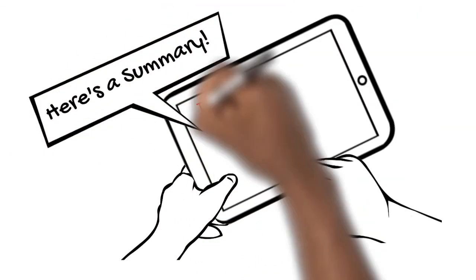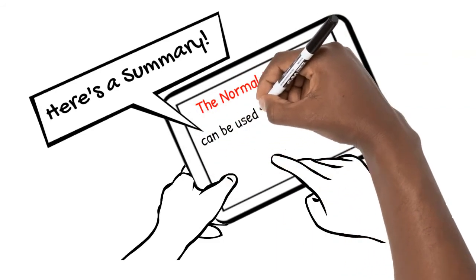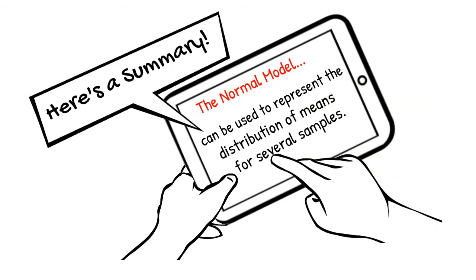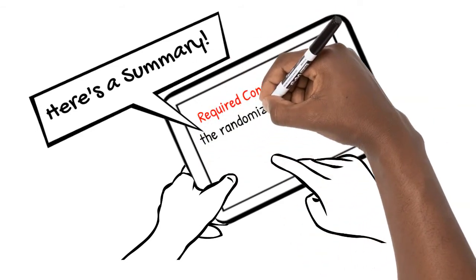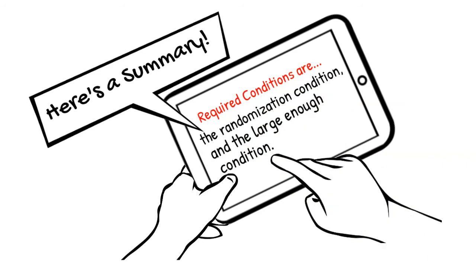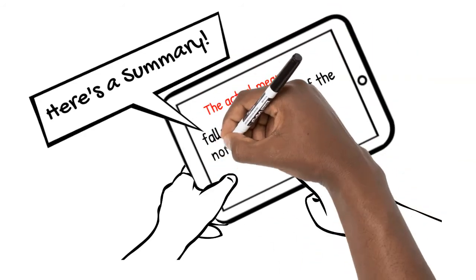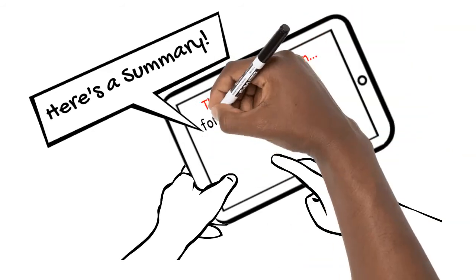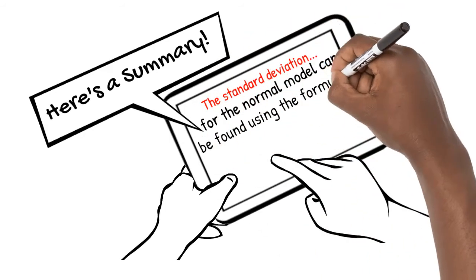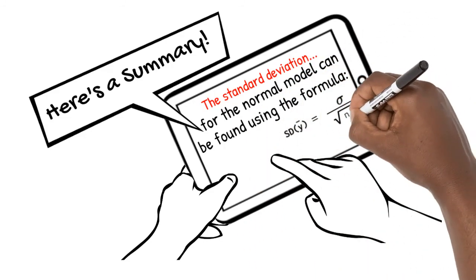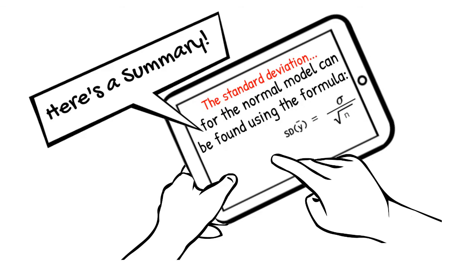Here's a summary of what we've learned. The normal model can be used to represent the distribution of means for several samples. Required conditions are the randomization condition and the large enough condition. The actual population mean falls in the center of the normal model. The standard deviation for the normal model can be found using the formula standard deviation of the normal model equals standard deviation of the population over the square root of the sample size.